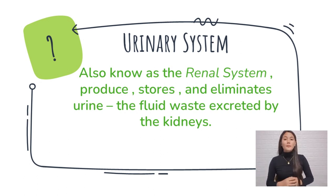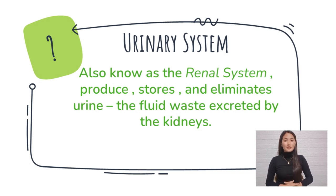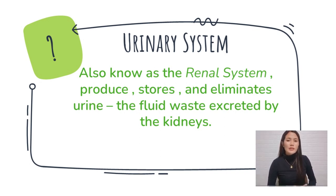The urinary system also regulates blood volume and blood pressure, controls the levels of electrolytes and metabolites, and regulates blood pH. It is important because it filters waste and extra fluid from the bloodstream and removes them from the body in the form of urine.